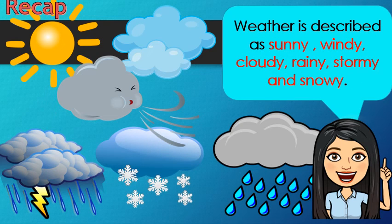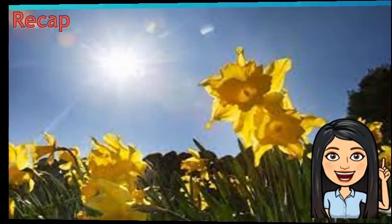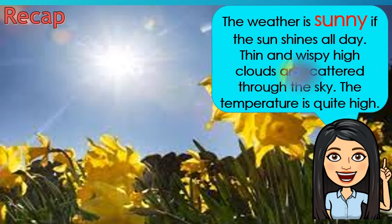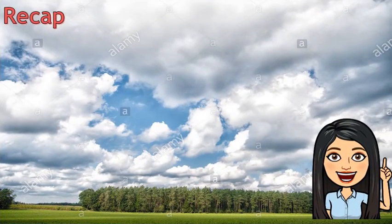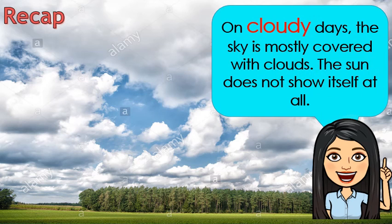Weather is described as sunny, windy, cloudy, rainy, stormy, and snowy. The weather is sunny if the sun shines all day. Thin and wispy high clouds are scattered through the sky, and the temperature is quite high. On cloudy days, the sky is mostly covered with clouds and the sun does not show itself at all.